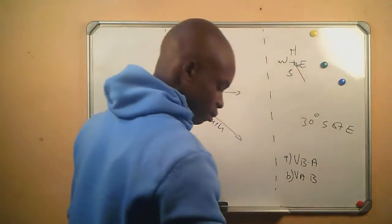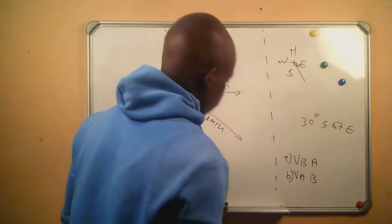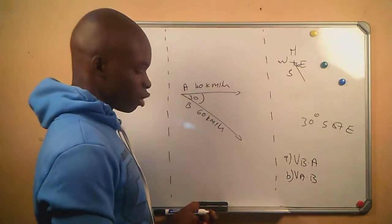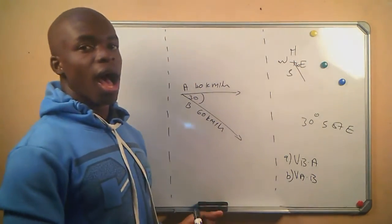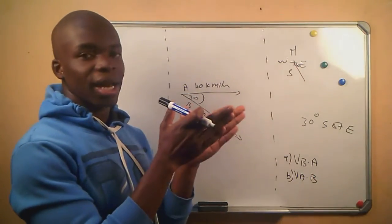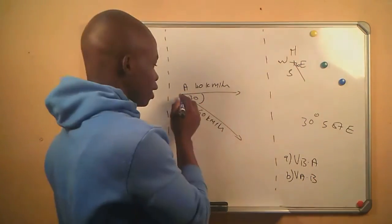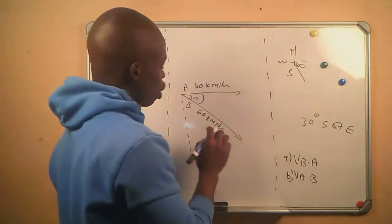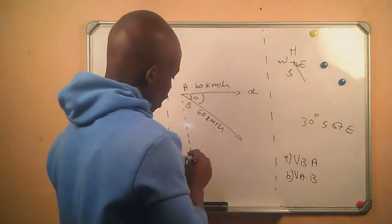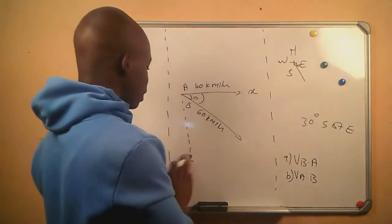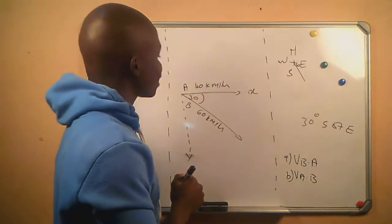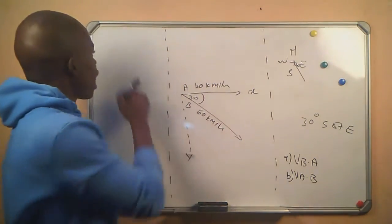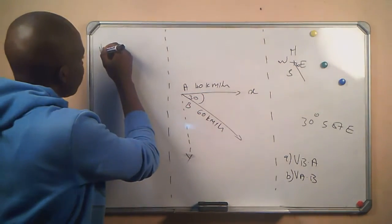Since we can tell from the diagram that these two cars are not moving in a parallel direction, that tells us that in this question we will have to consider the x and y components — the x and y direction of each car. We start with Car A: the velocity of Car A relative to the ground.